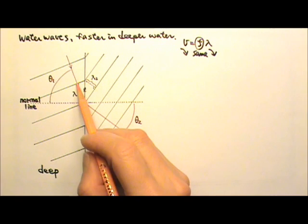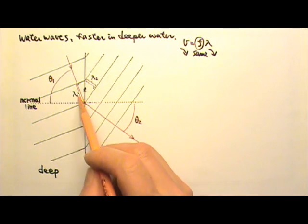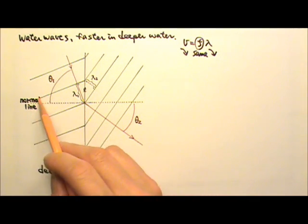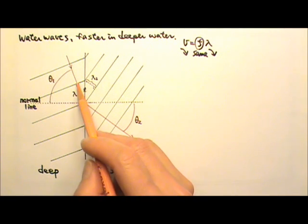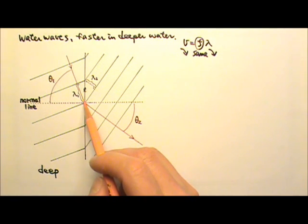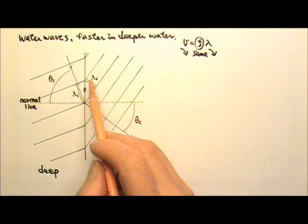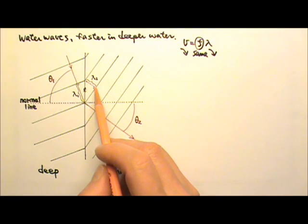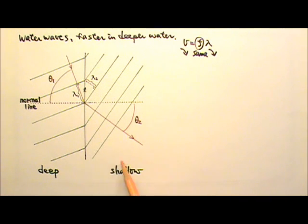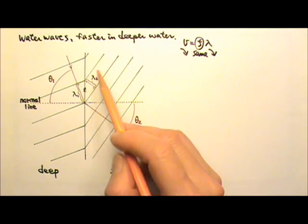Remember that wavelength is the distance between adjacent crests, and wave fronts are lines of wave crests. So this distance is the wavelength before the refraction, and this distance is the wavelength after the refraction. So the wavelength gets shorter in shallower water if the wave bends this way.